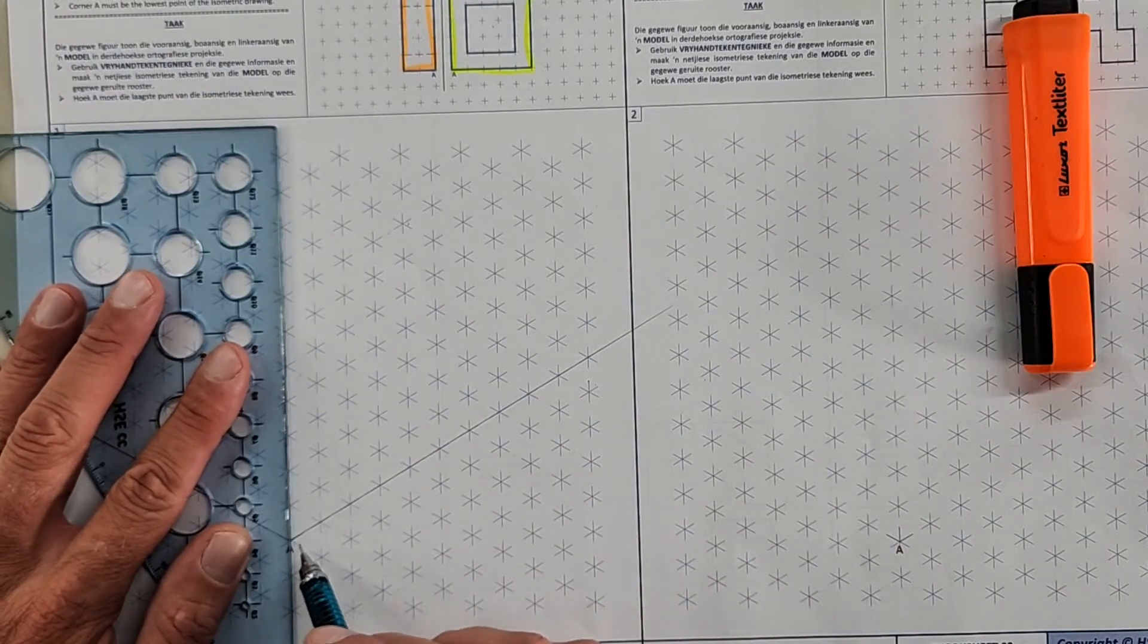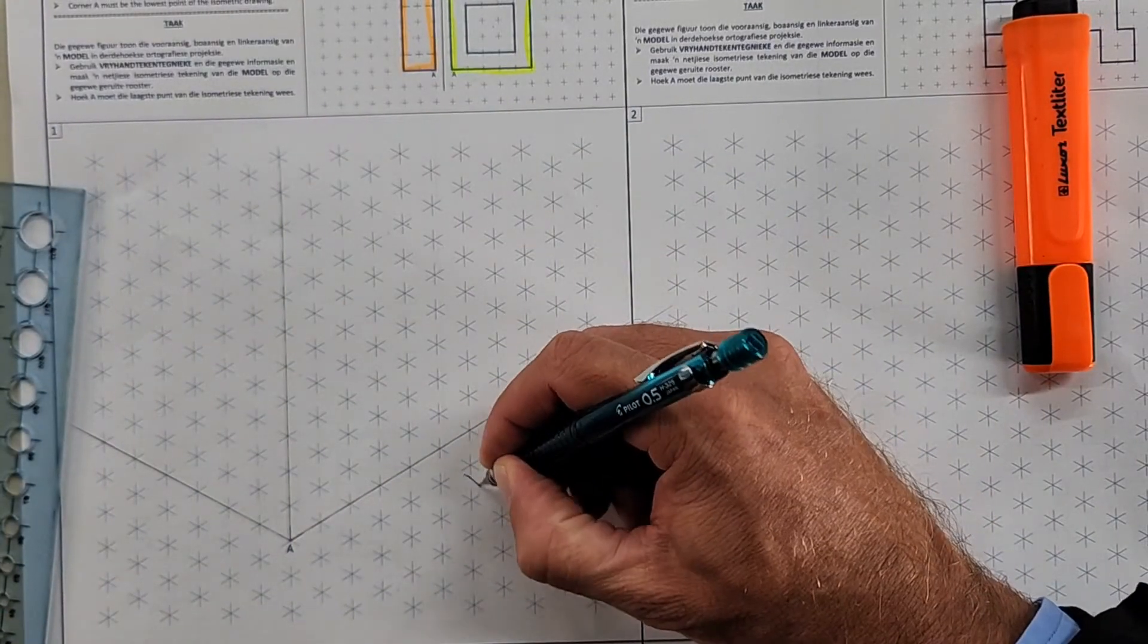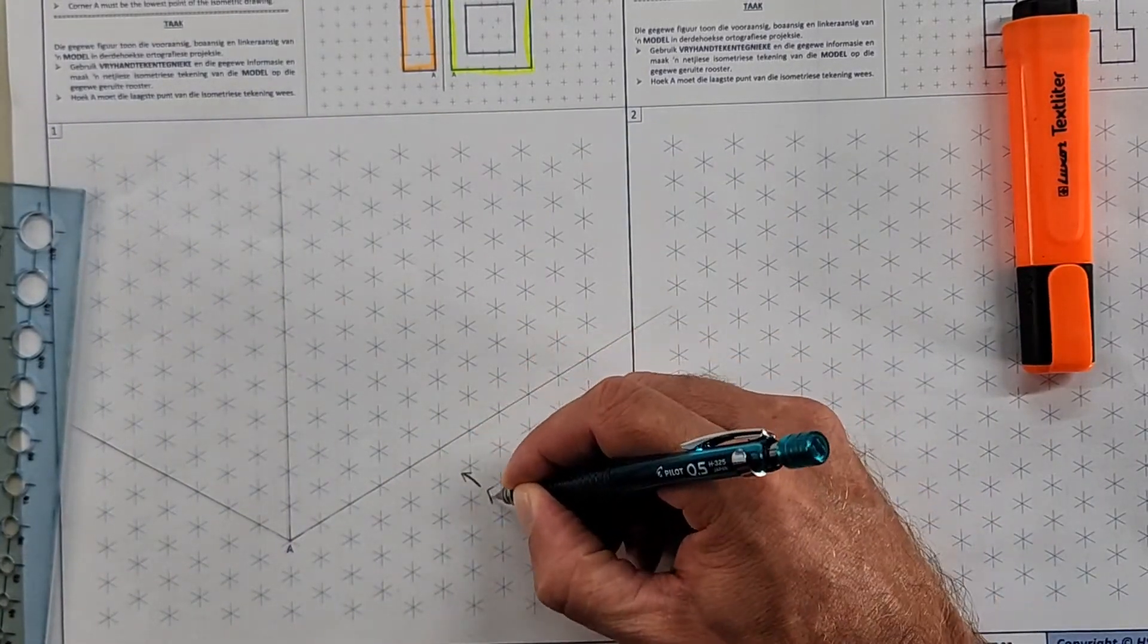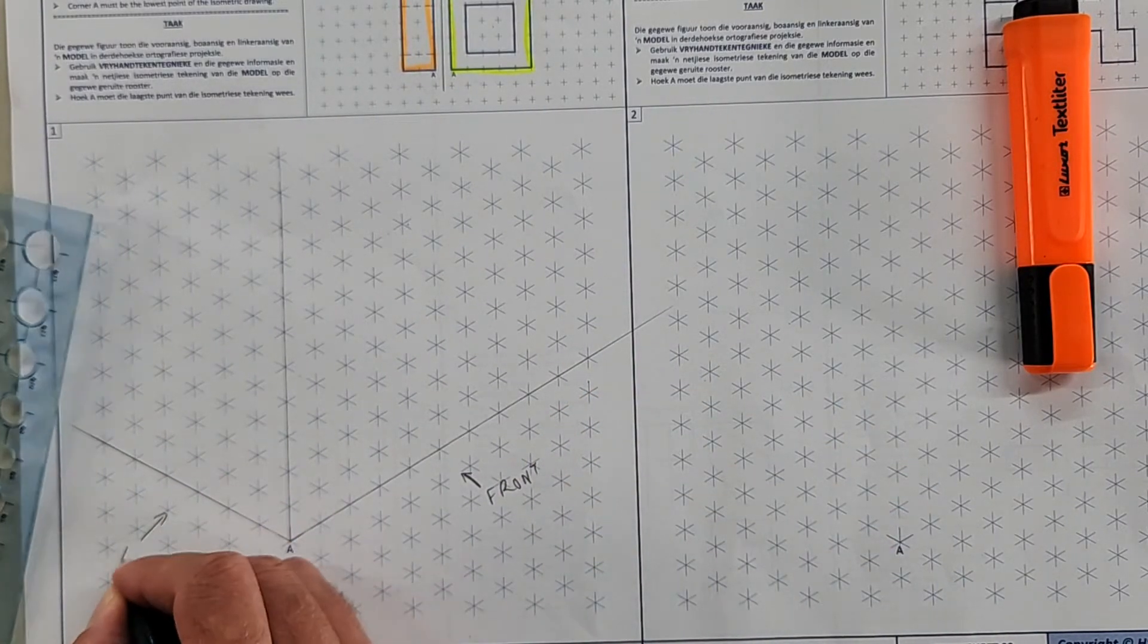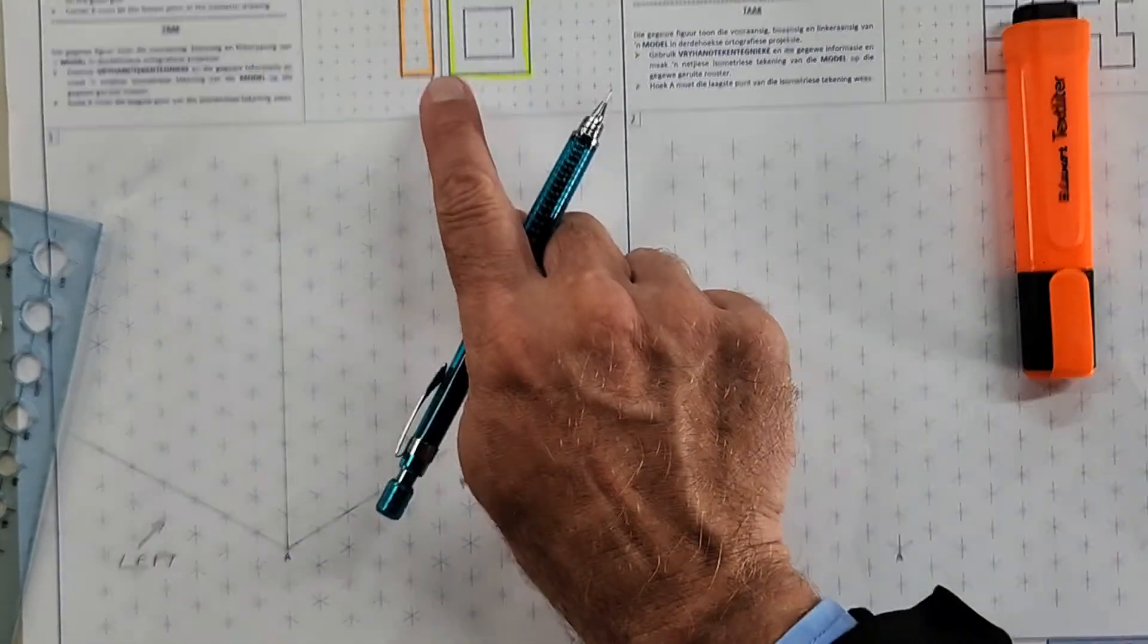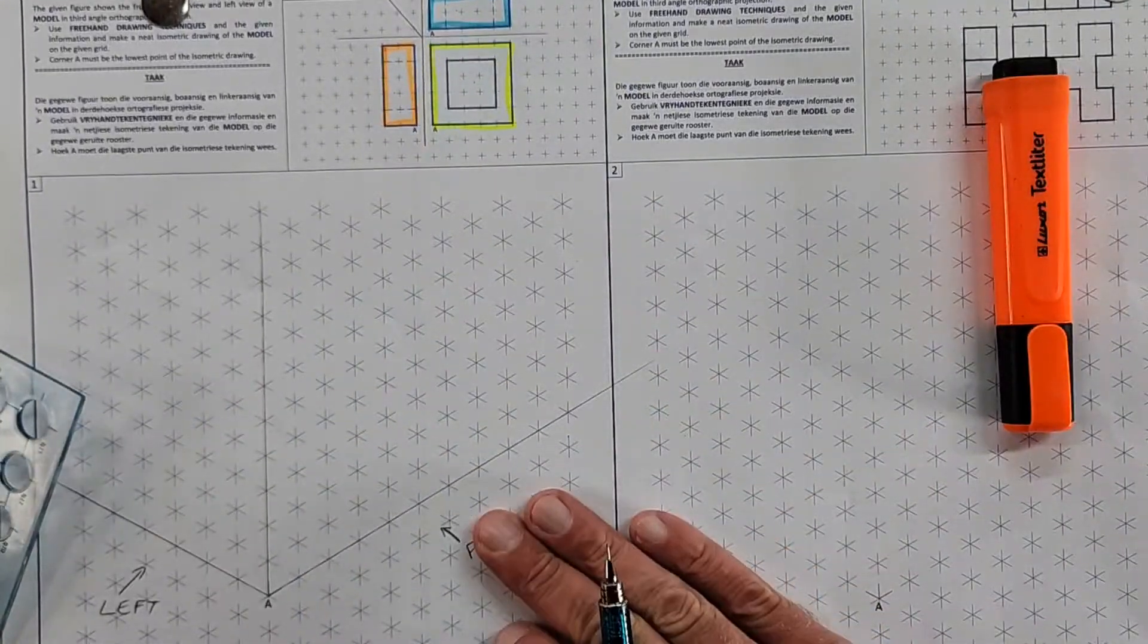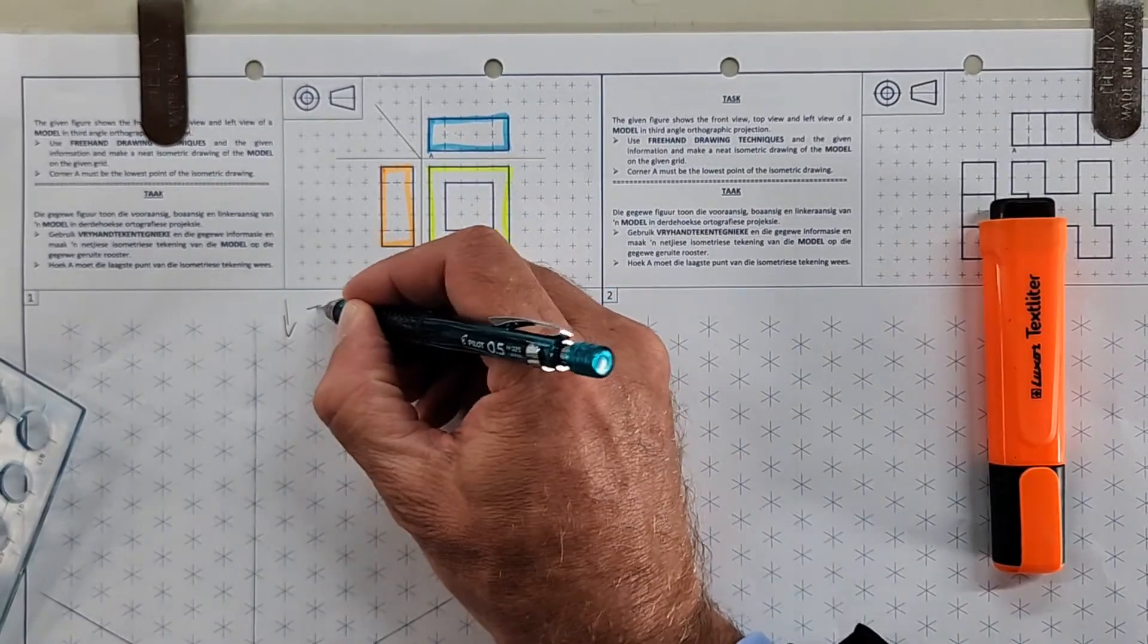And then I identify what view this one here is. Our front view and this one here is our left view. So if I look from this side, I want to see my orange part. If I look from this side, I want to see my yellow part, and of course then there's also a top.